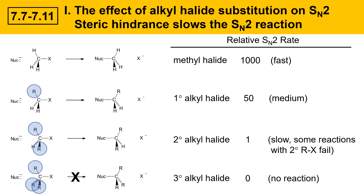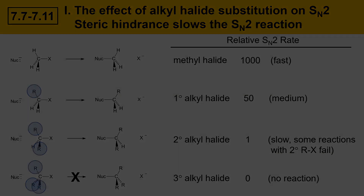The take-home message for substitution is that steric hindrance is a big factor in slowing down the SN2 reaction. The first thing you should do when determining whether an SN2 reaction will work is look at the substitution of the alkyl halide and classify it as methyl, primary, secondary, or tertiary. That will give you a good idea of how readily the SN2 substitution reaction may proceed.